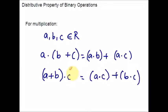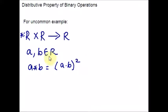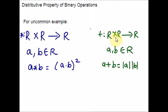For a more uncommon example, I am going to take an example. Please consider these settings. For the operation asterisk, R × R gives you R again, where A, B belong to the set R, and A asterisk B equals (A · B)², i.e., A dot B the whole square. Same way, for the operation addition, R × R gives R again, A, B belong to R, and A plus B is defined as |A| · |B|, modulus of A times modulus of B. Now we are going to apply these definitions and check the distributive properties.